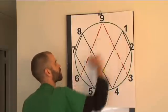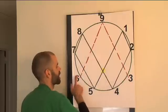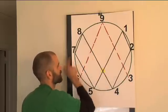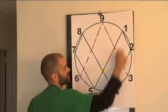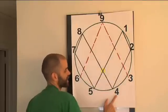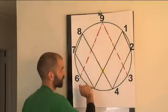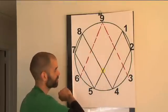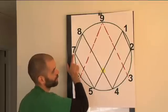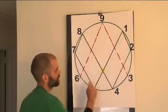How about if I go the other way? 1 plus 6 is 7. Now I'm using my 6. 7 plus 6 is 13, which is 4. 13 plus 6 is 19, which is 1. Or I could say 4 plus 6 is 10, which is 1. 10 plus 6 is 16, which is 7. 16 plus 6 is 22, which is 4.